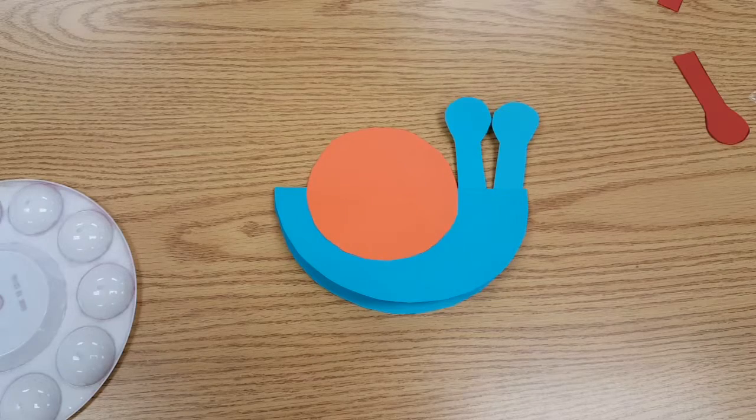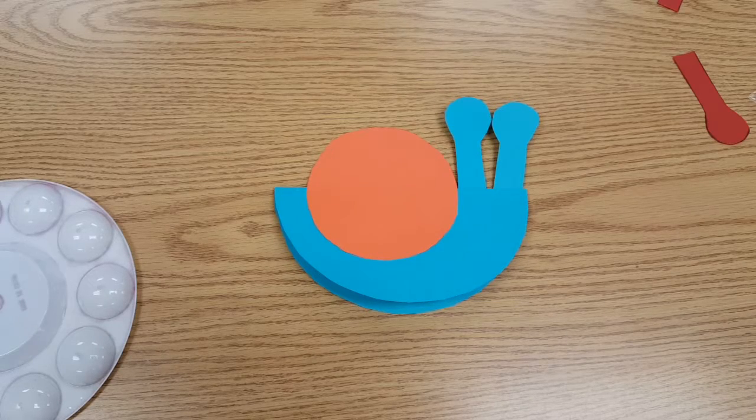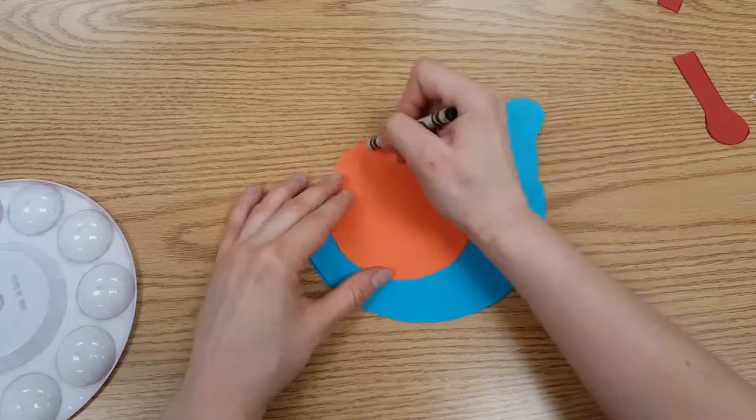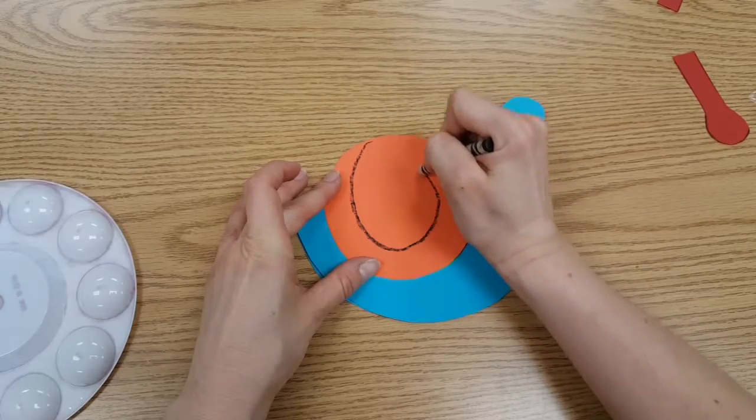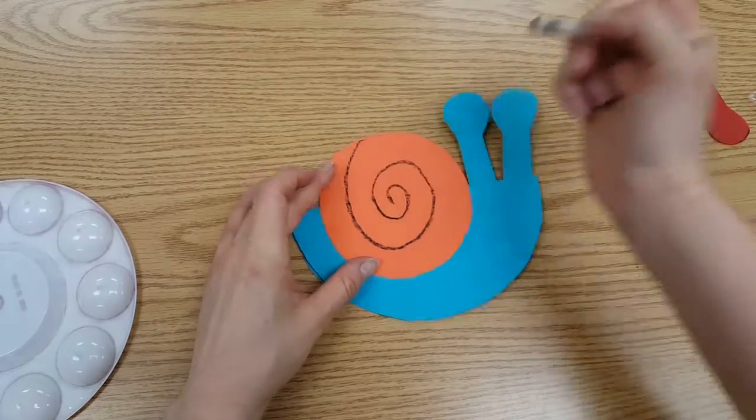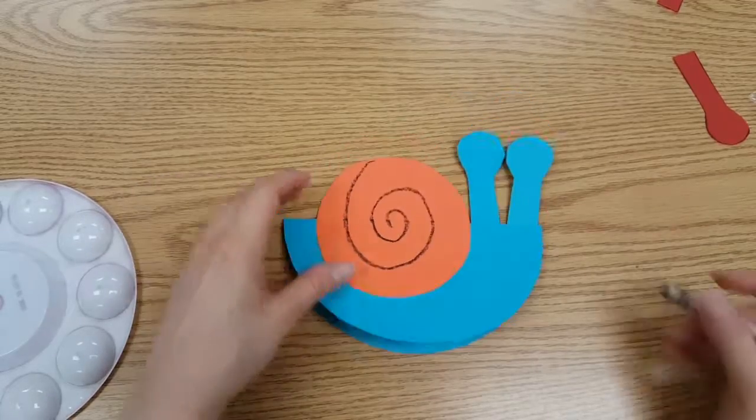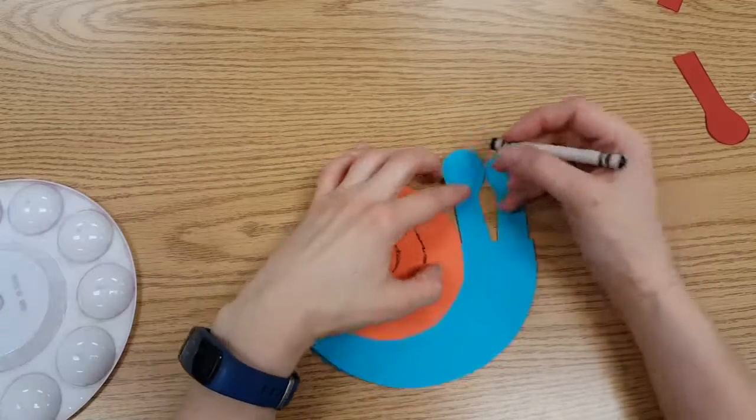Once everything is glued, the book was called Swirl by Swirl for a reason because it was showing all the swirls in nature. So we need to make a swirl on that snail shell and then you can decorate it a little more. You can jazz it up a bit.